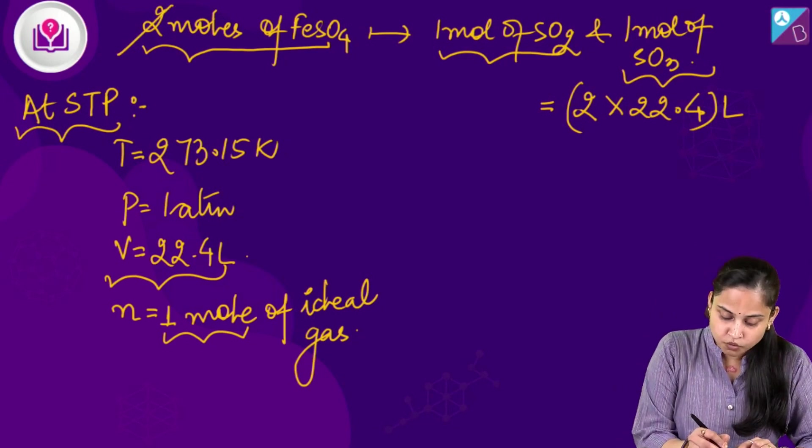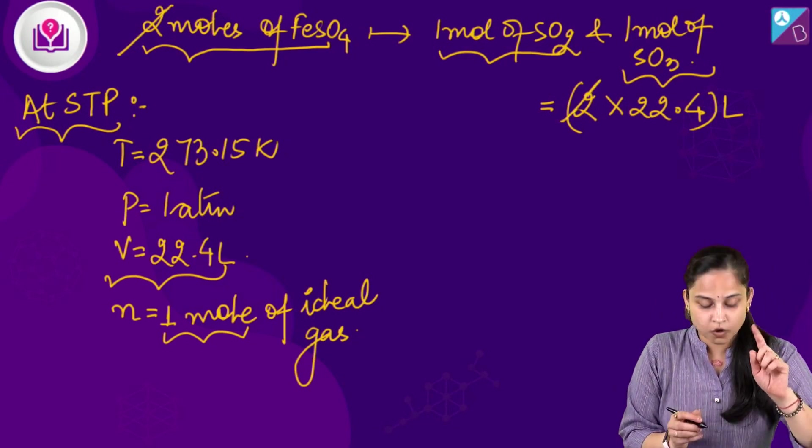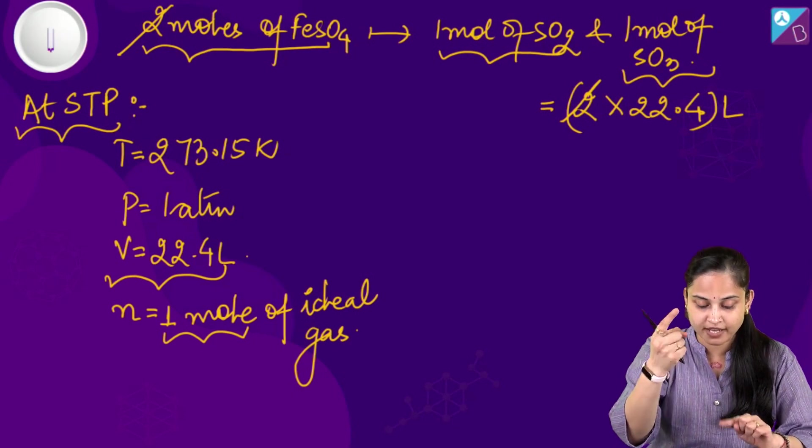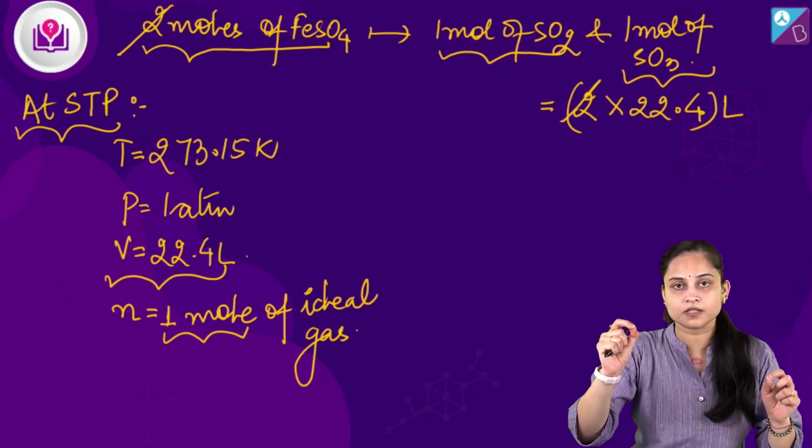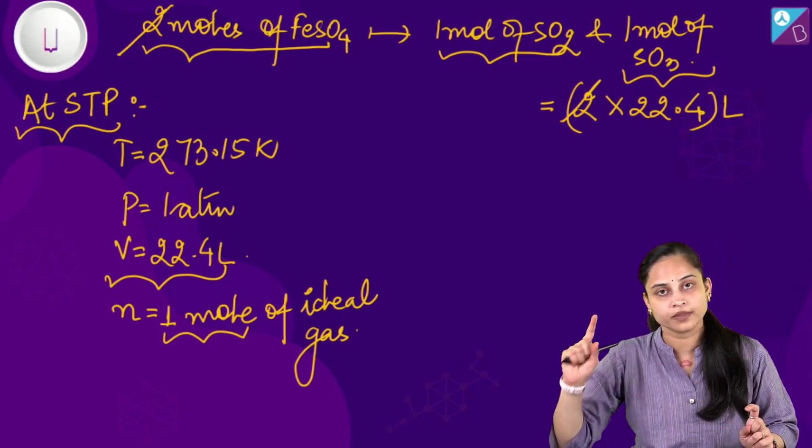So this 2 cancels out with this 2. Now, we can say 1 mole of FeSO₄ gives us 22.4 litres of the total gases that is evolved in the product.